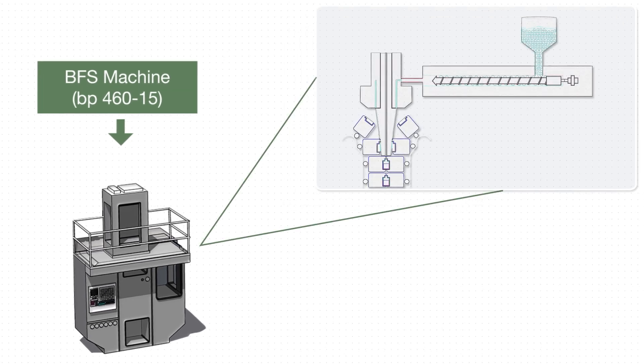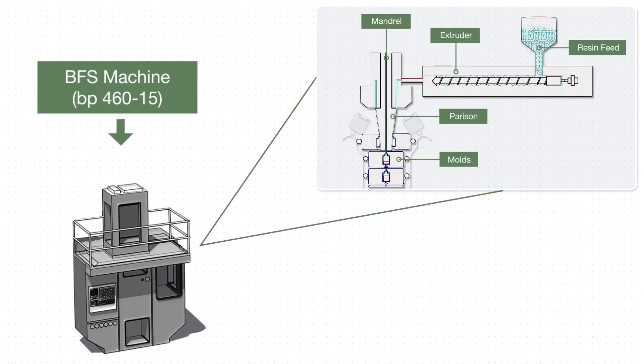The extruder provides a uniform oval sheet of hot resin known as the parasin. Gravity continuously carries this parasin down around the mandrel and to the molding area where it is formed and cooled by molds into the BFS container.